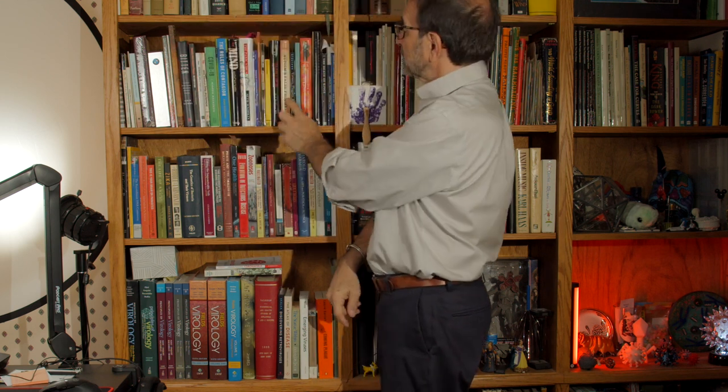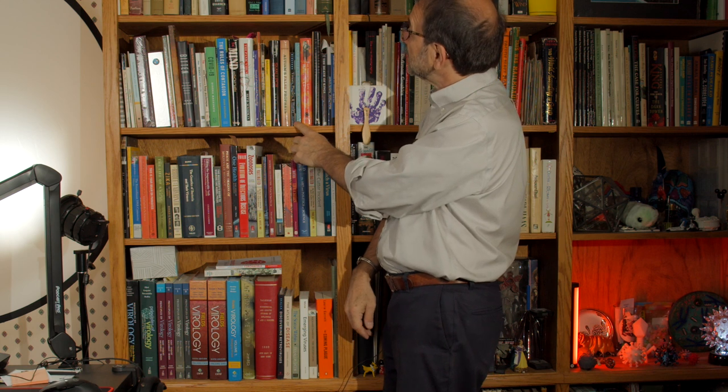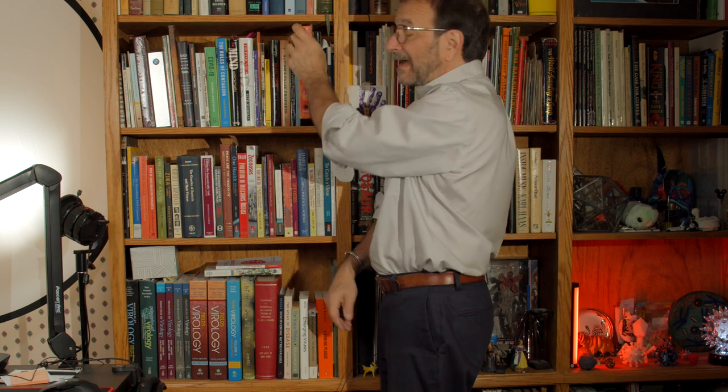And we have Autism's False Prophets by Paul Offit. Bad Science, Risky Medicine, and the Search for a Cure. The title tells it all, right? It's all about autism and why people think it's linked to vaccines, but it really isn't. Paul Offit, of course, the architect of vaccines himself. Viruses, Plagues, and History by Michael Oldstone. Then we have The Immortal Life of Henrietta Lacks by Rebecca Skloot. Henrietta Lacks, of course, was the individual from whom HeLa cells were taken in the 1950s. This is a great book telling the history of it. And you'll find my name in this book a couple of times.